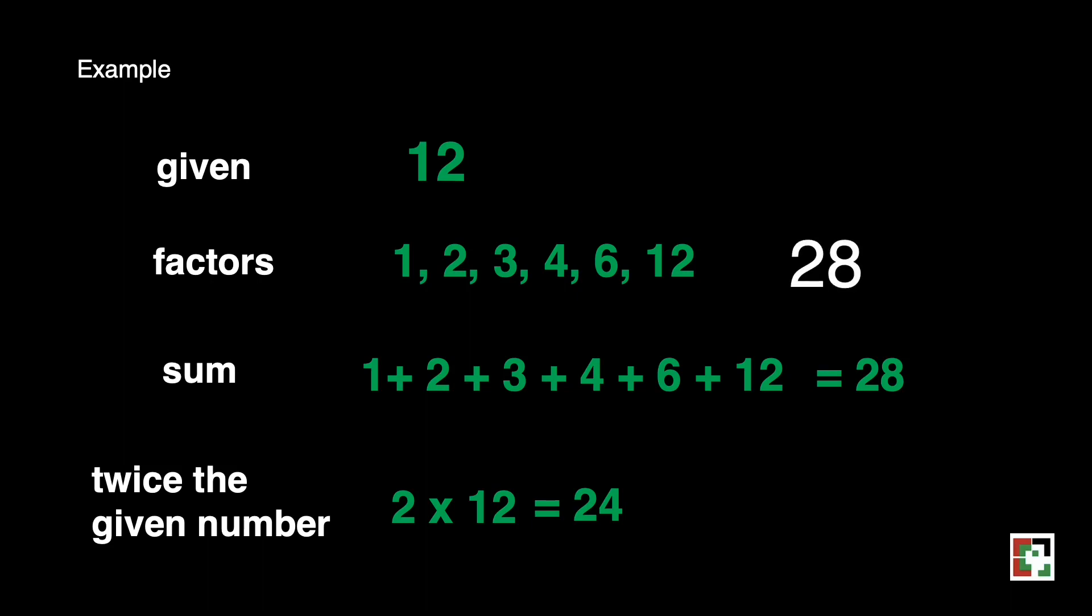We can say that the sum of the factors of 12 is greater compared to its twice that number, which is 24. We can say that 12 is an abundant number.